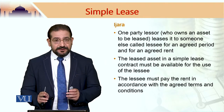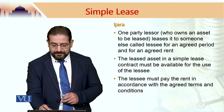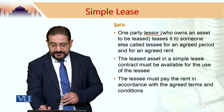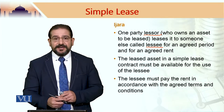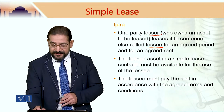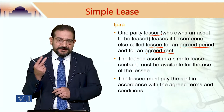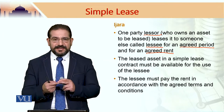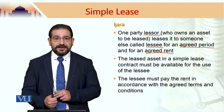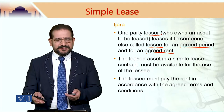So in IJARA there are three or four things. There are two parties — we call party one the Lessor, who gives something on lease, and the Lessee is the one who takes that thing on lease. There must be an agreed period and an agreed rent. So the transacting parties are Lessor and Lessee, an agreed time period, the agreed rental, and of course the asset to be leased must be there as well.